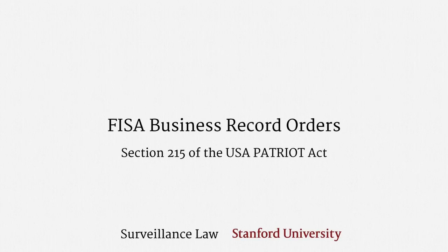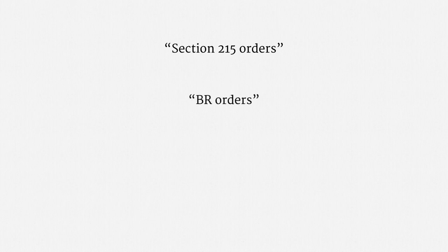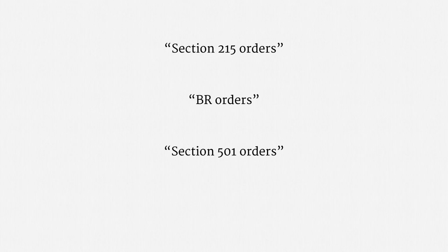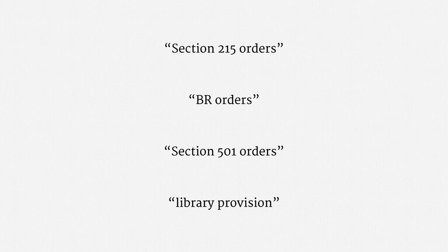This lecture explains business record orders under FISA. Since business record orders were greatly expanded by Section 215 of the USA Patriot Act, they're often called Section 215 orders. You might also hear them called BR orders. They're also sometimes dubbed Section 501 orders, since this is Section 501 of FISA as amended. And since much of the early debate about Section 215 related to library records, it's also sometimes called the library provision of FISA. All refer to the exact same type of order.